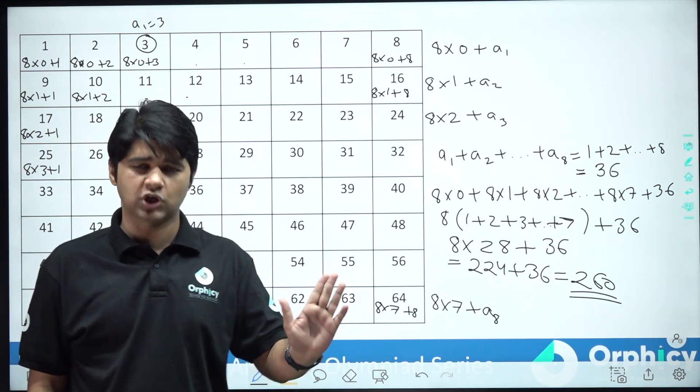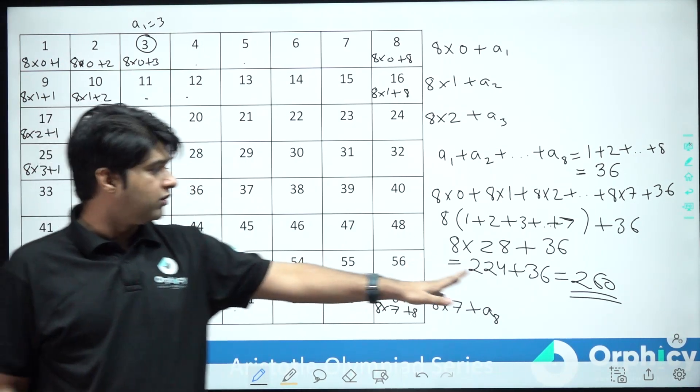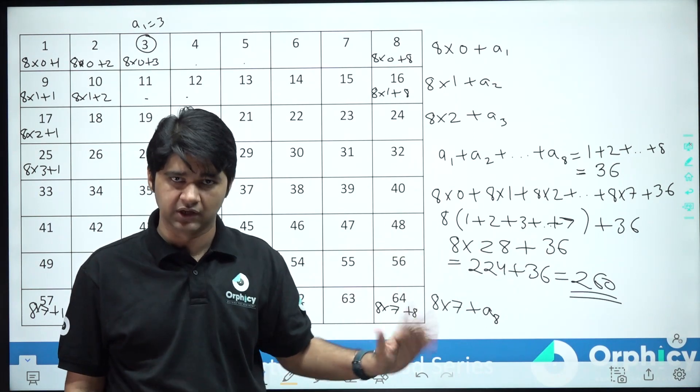So if you choose any number, your sum is always and always going to be 260 only.